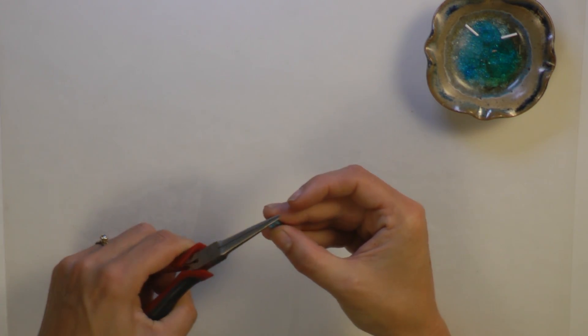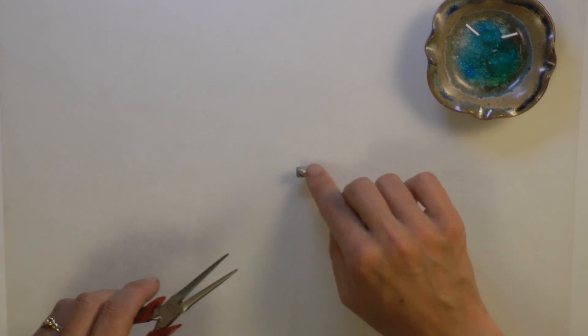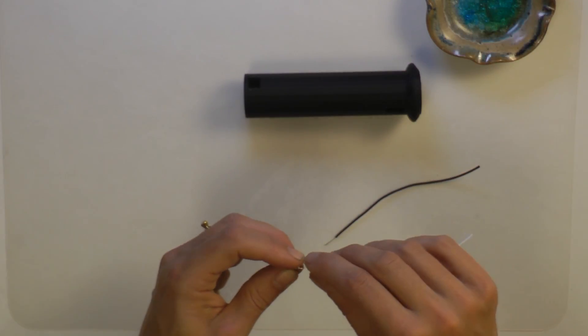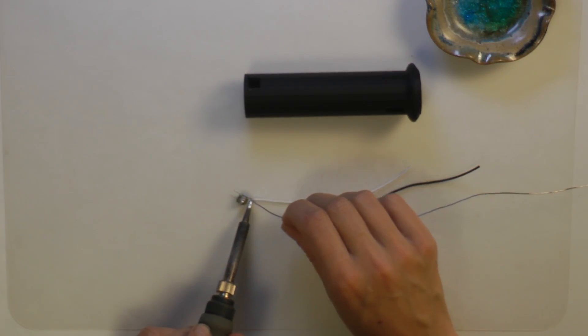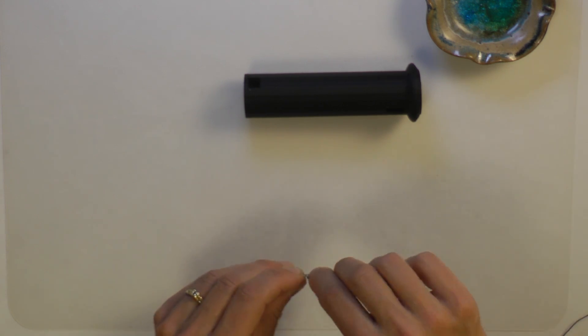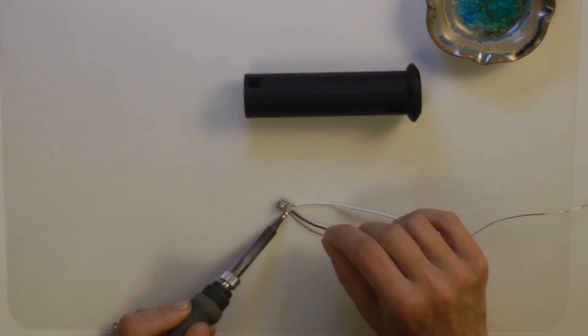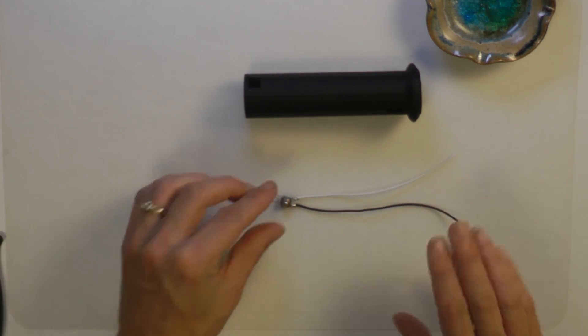Use pliers to flatten the legs of your button and solder a 6-inch white and black wire to the legs on one side. Cover them with heat shrink and cut off the legs on the other side.